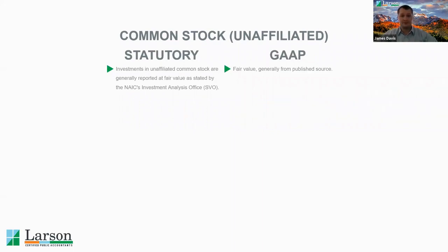For common stock, usually under GAAP you report it at fair value, which is easily obtained from a published source such as the stock exchange. Under statutory accounting, investments in unaffiliated common stock are generally reported at fair value as stated by the NAIC's Securities Valuation Office, or SVO.